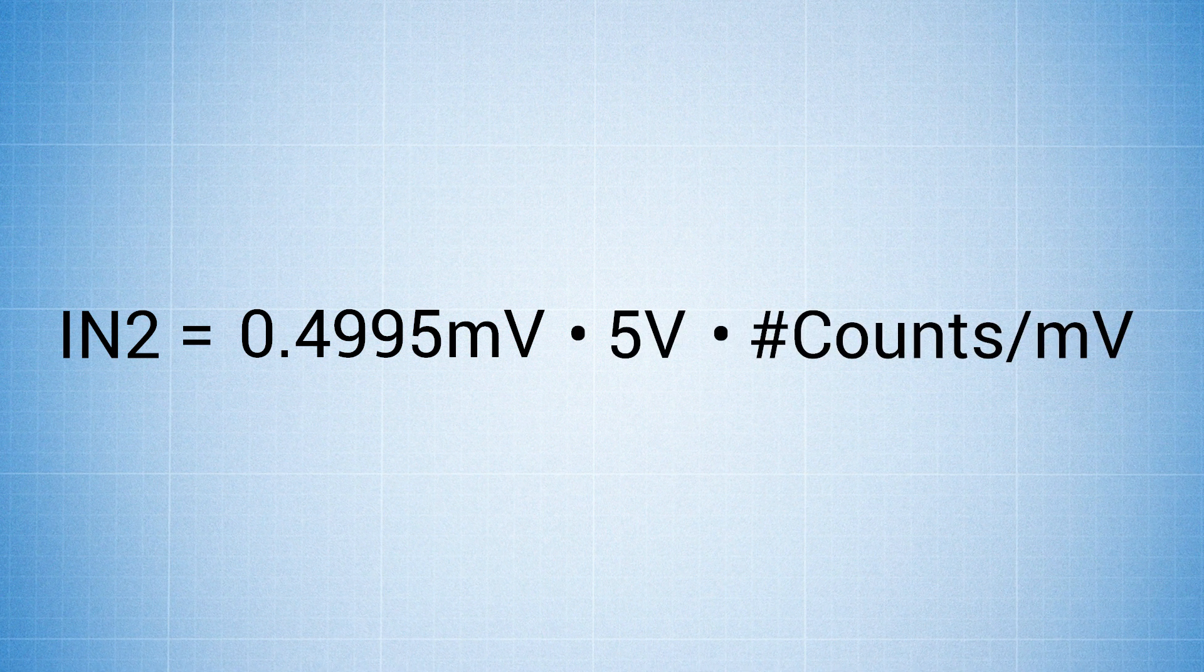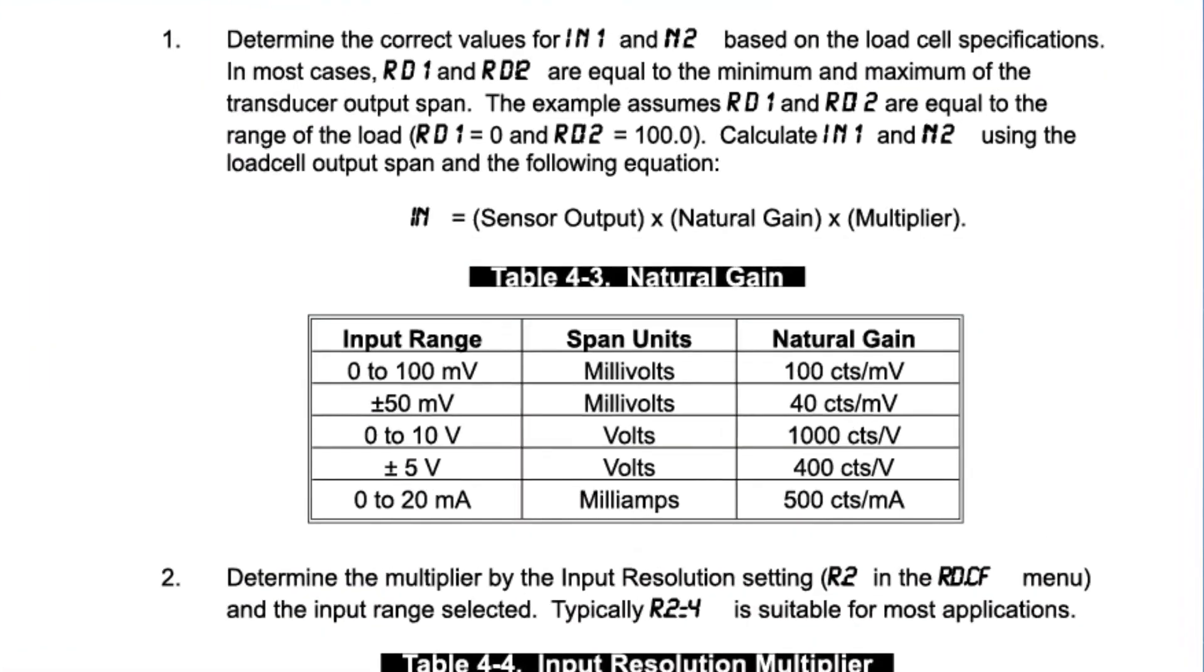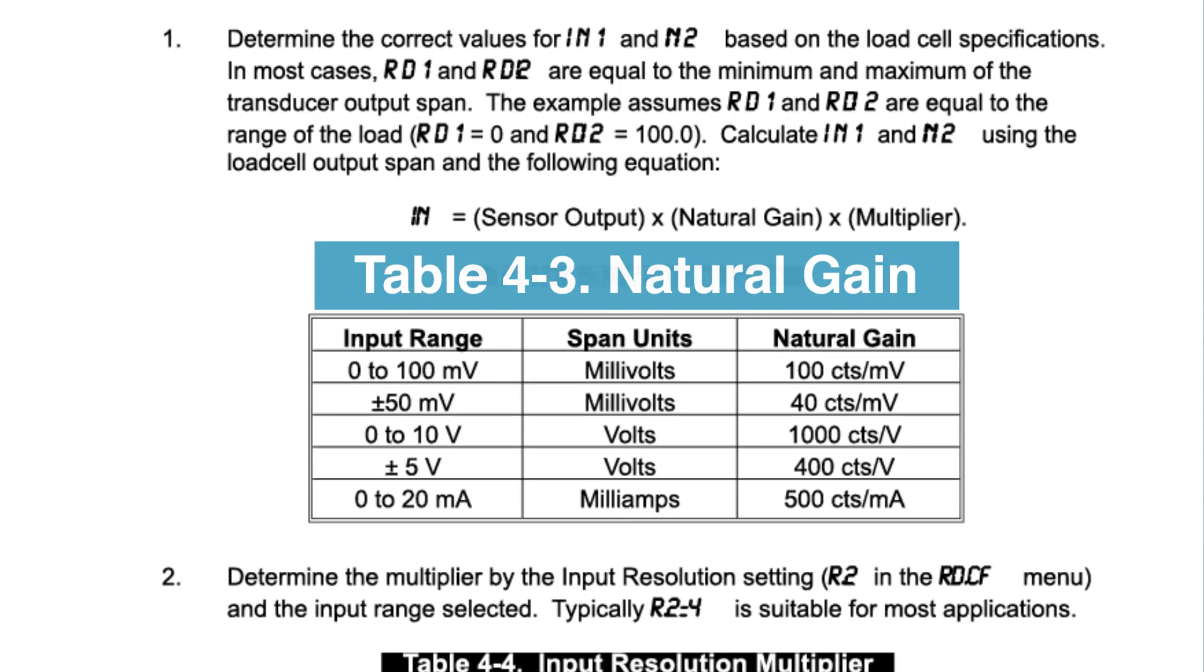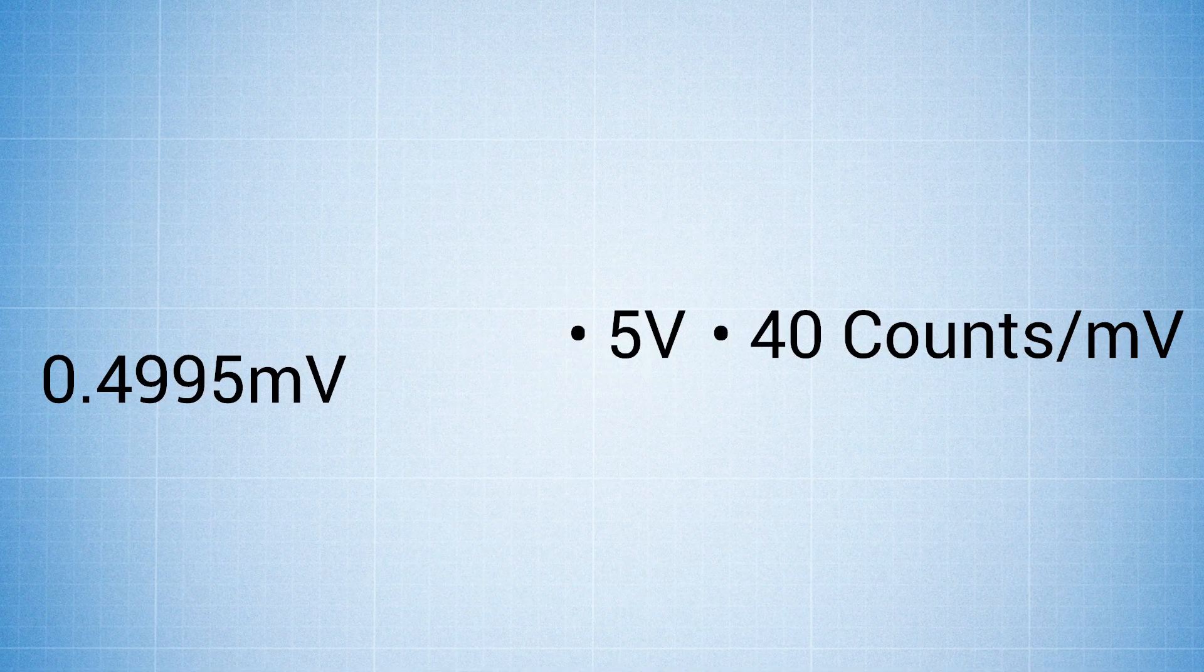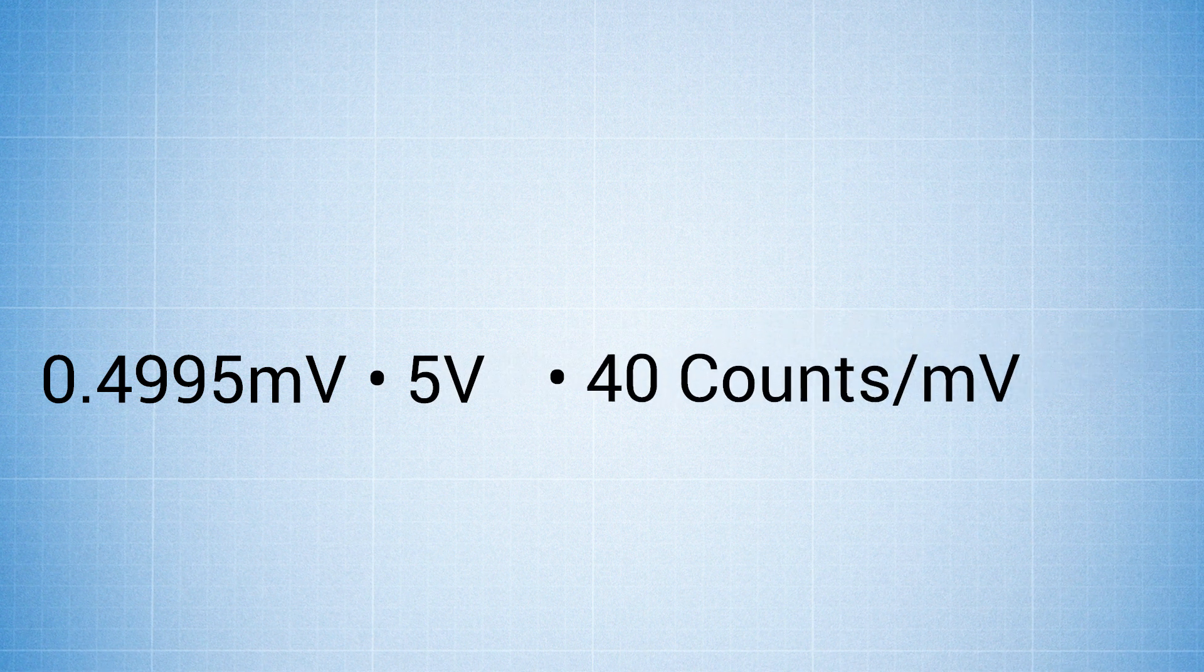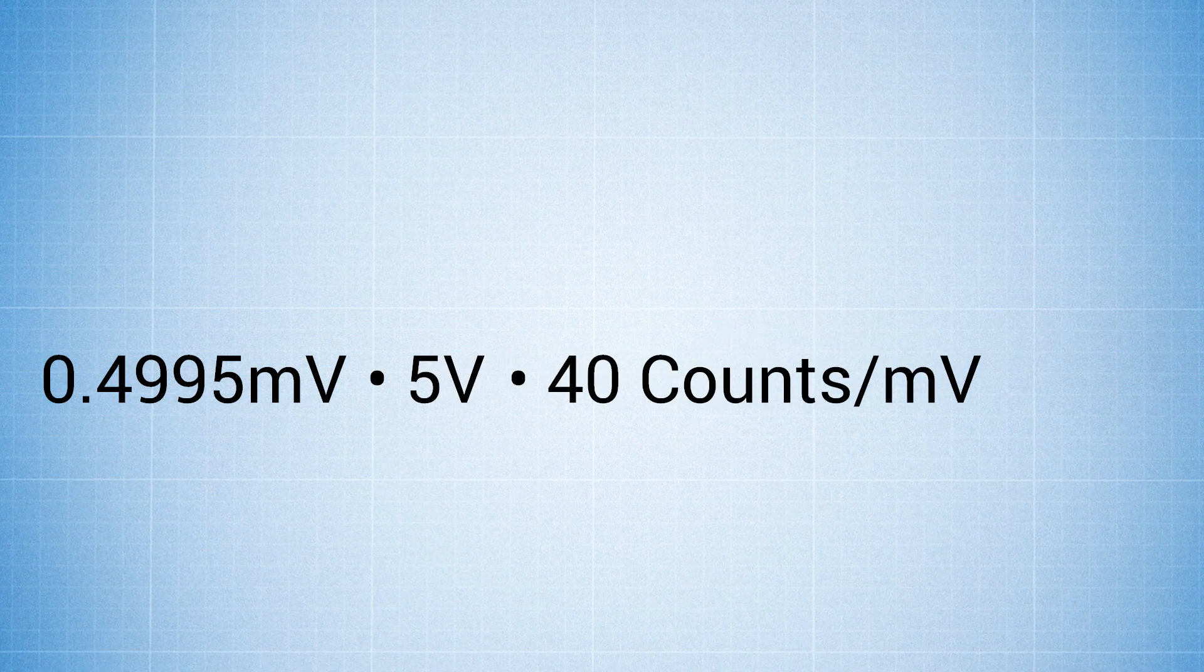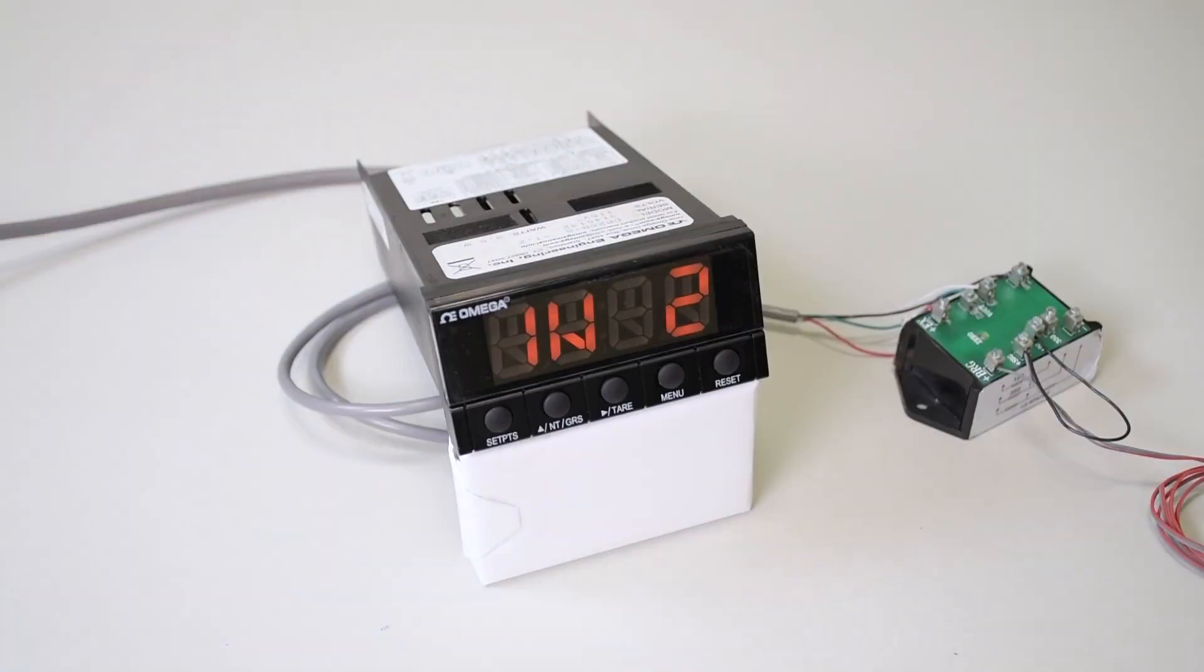Multiply that with the number of counts per millivolt. If you want to know the number of counts per millivolt corresponding to the input range, see page 26 of the DP25B-S manual. Look under natural gain. For plus or minus 50 millivolts, natural gain is 40 counts per millivolt. 0.4995 millivolts per volt multiplied by 5 volts multiplied by 40 counts per millivolt gives you 99.99. That's exactly what we're going to put in IN2.